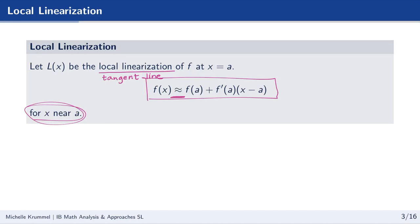It is very important that we use an approximation symbol here, because the function f is not equal to the tangent line at points near a — it's only exactly equal to the tangent line right at x equals a. When you move away from that point, your function isn't exactly equal to the tangent line, but it's very near equal.